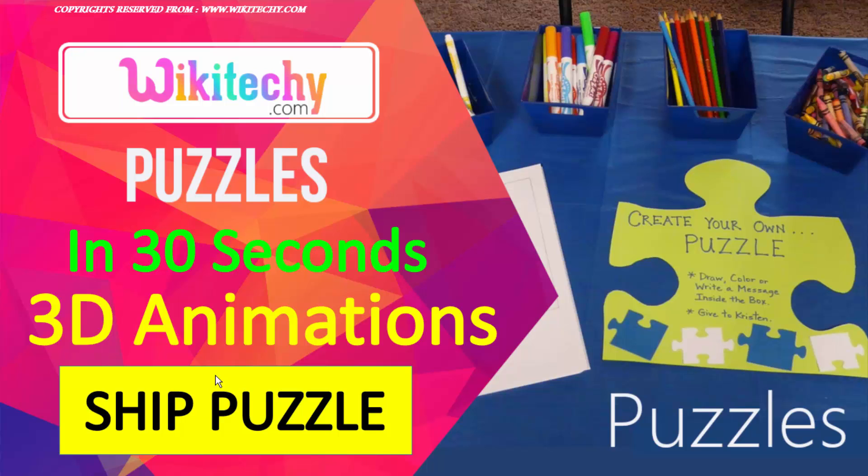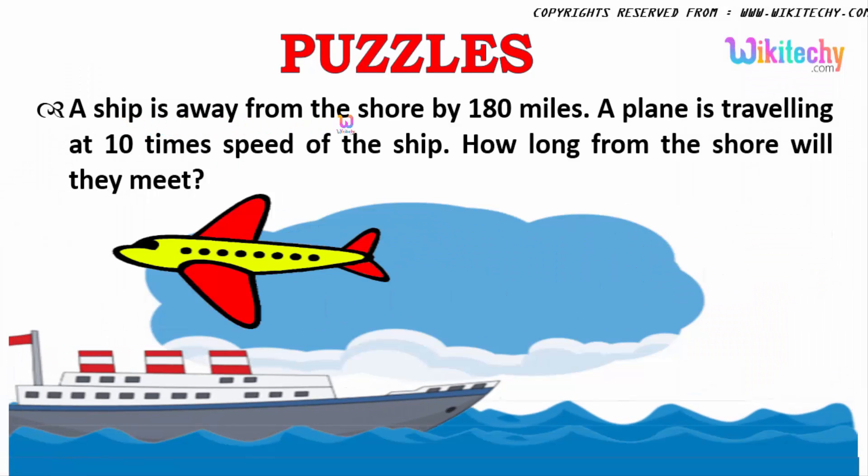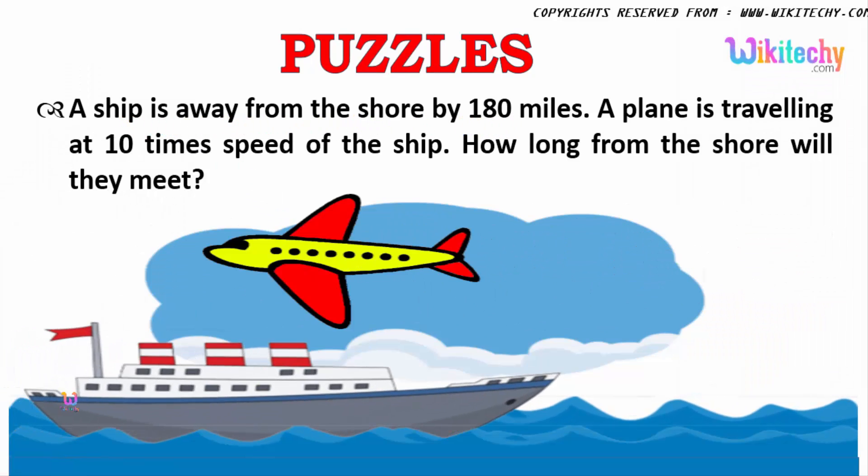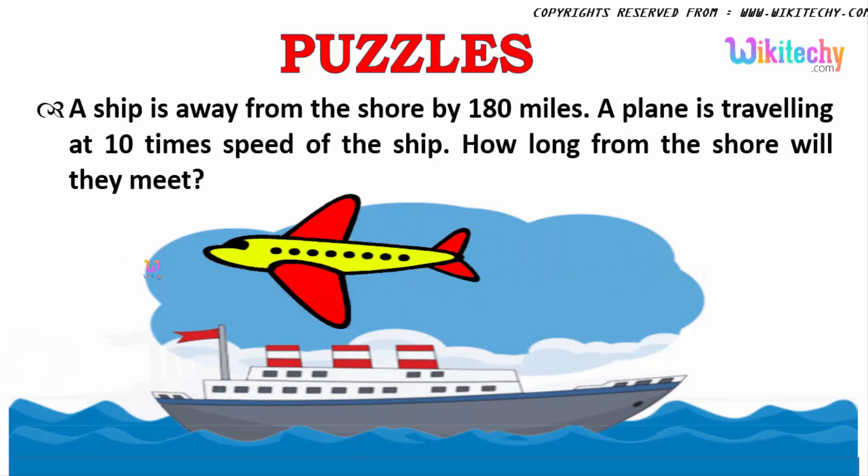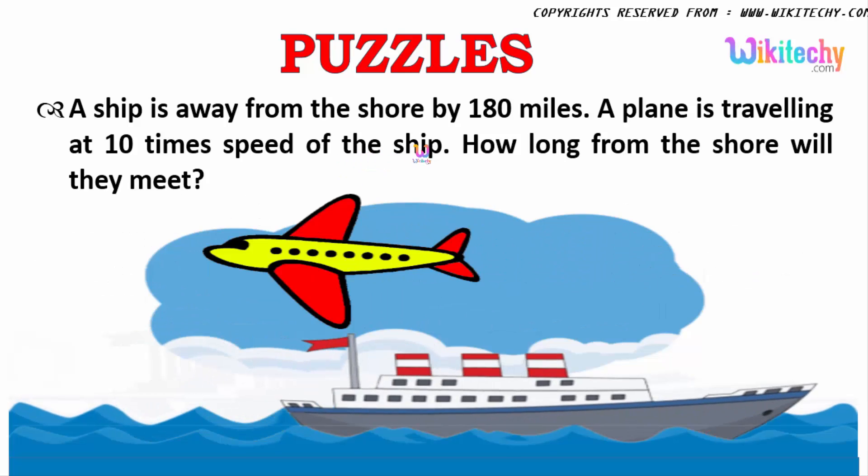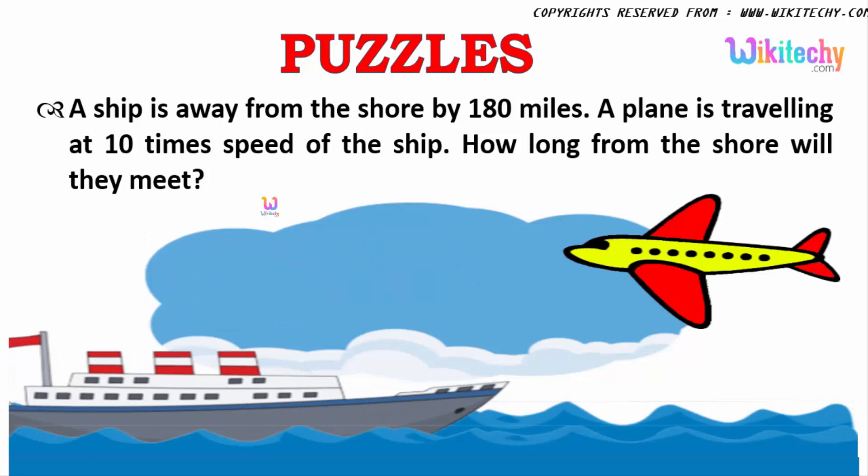Welcome to wikitechy.com and here is the puzzle which you can solve in 30 seconds. A ship is away from the shore by 180 miles. A plane is traveling at 10 times the speed of the ship. How long from the shore will they meet? This is the question.